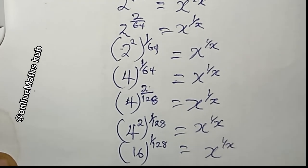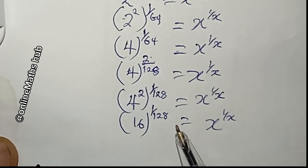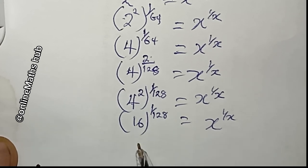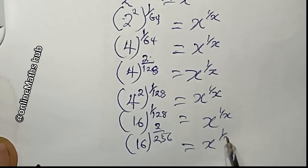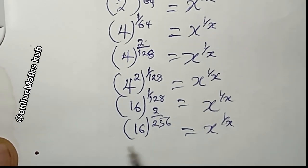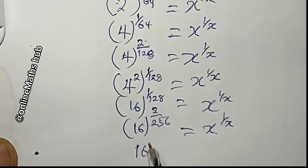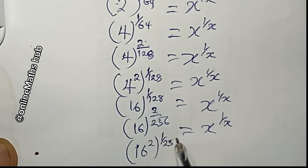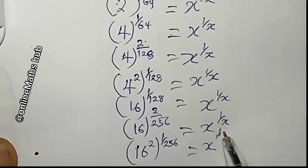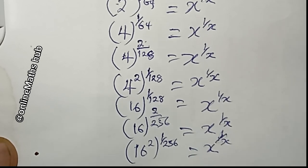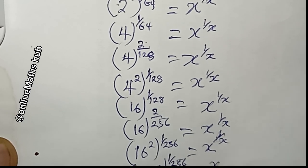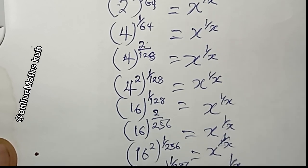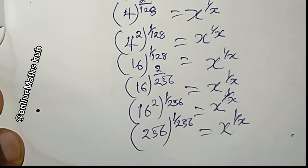Repeating the process once more, multiplying by 2, I get 16 to the power 2 over 256. Pulling the 2 inside gives 16 squared to the power 1 over 256. Since 16 squared is 256, this becomes 256 to the power 1 over 256 is equal to x to the power 1 over x.